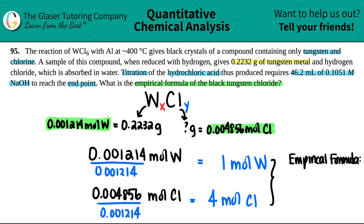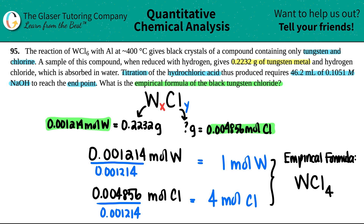We are now ready to write the empirical formula. Tungsten comes first: W with a subscript of 1 (which we don't need to write). Then Cl with a subscript of 4. So the empirical formula is WCl₄. This problem combined titration concepts from this chapter with empirical formula work from the previous chapter.